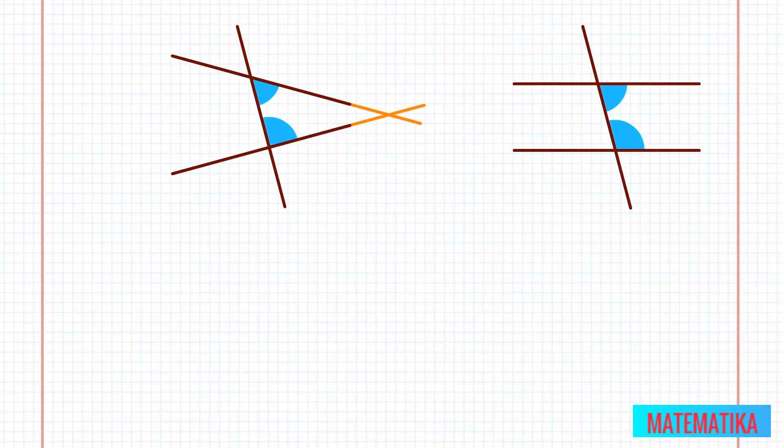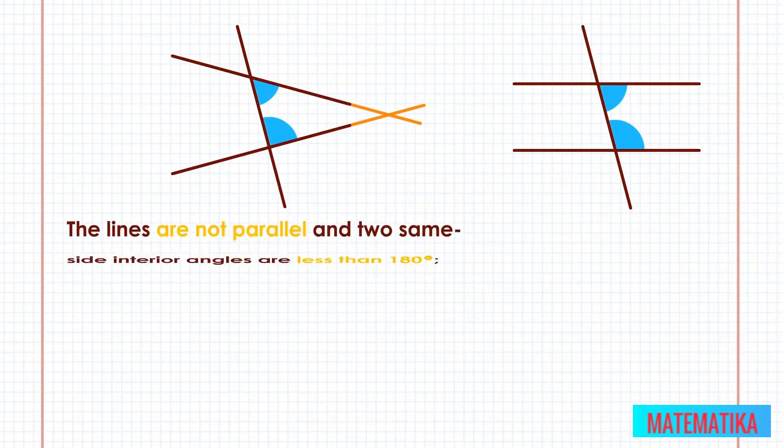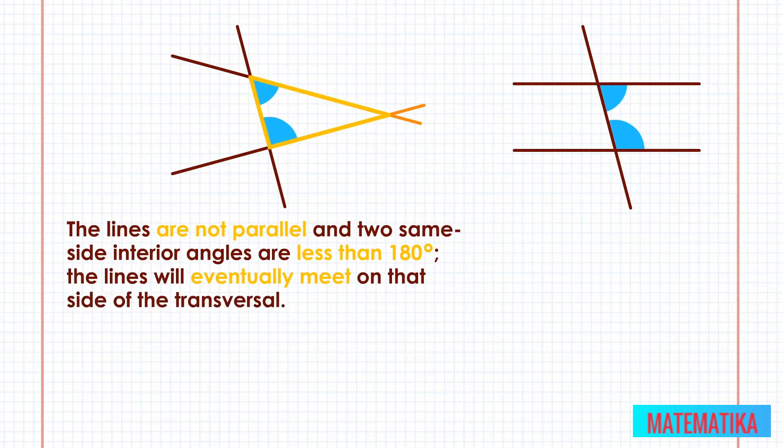Euclid's parallel postulate allows that transversal to create many different angles as it cuts across the two lines, but it all boils down to only three possibilities. The lines are not parallel and two same side interior angles are less than 180 degrees; the lines will eventually meet on that side of the transversal.